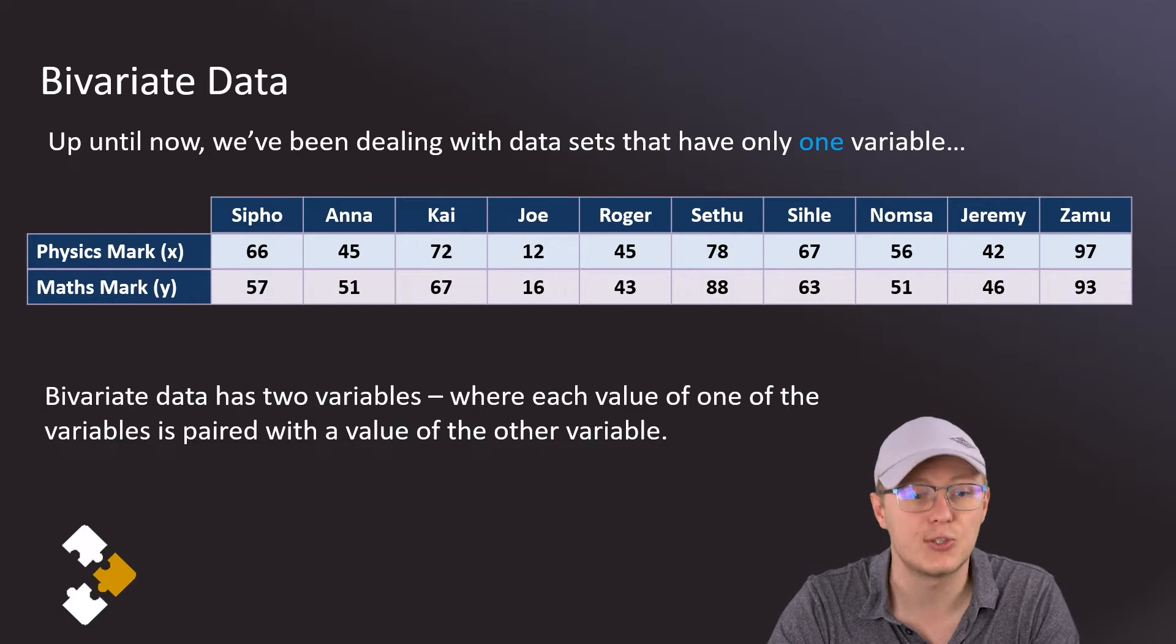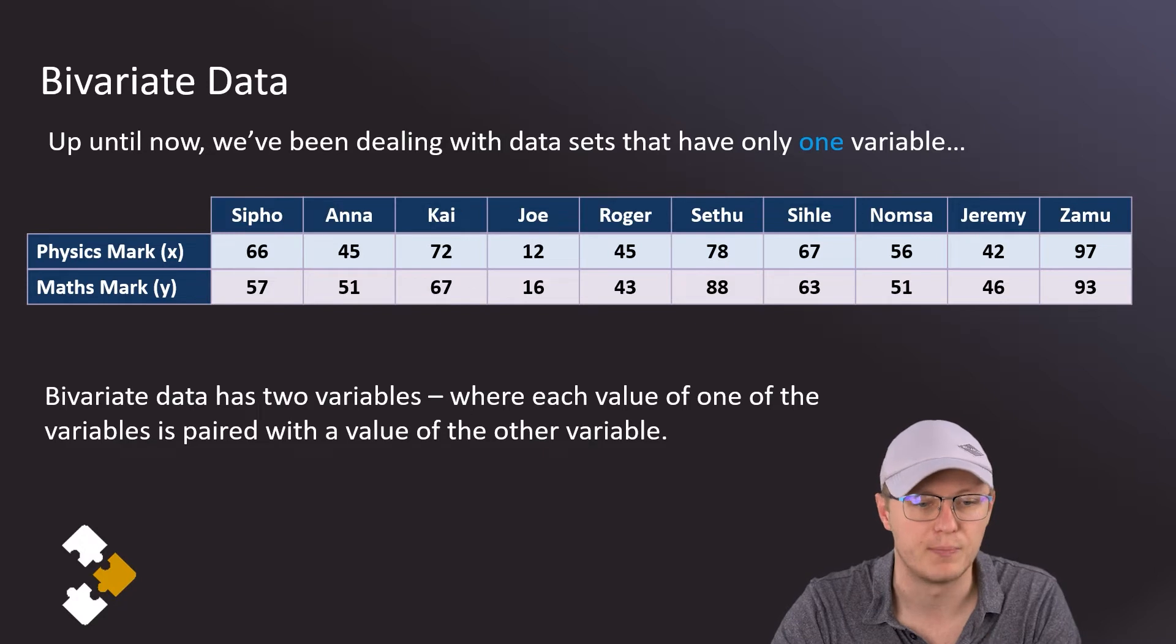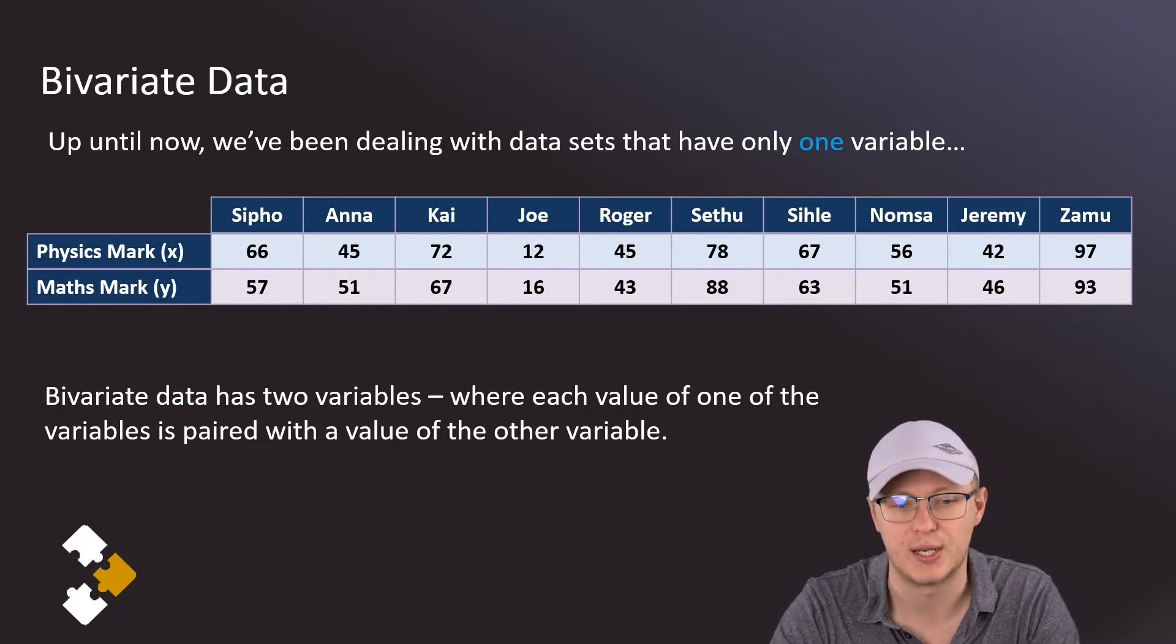Sipo's physics mark has to go with Sipo's maths mark. We can't combine Sipo's physics mark with Anna's maths mark because those two don't go together. This is going to be an ordered pair where those two variables belong together. The particular physics mark goes with a particular maths mark.